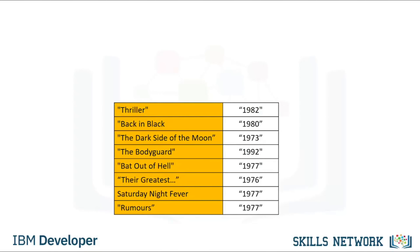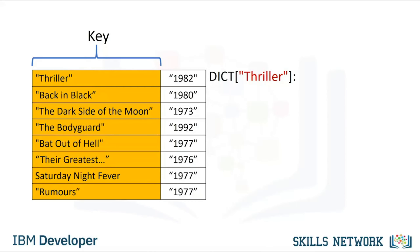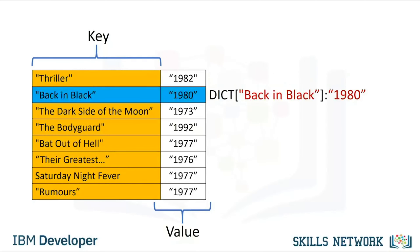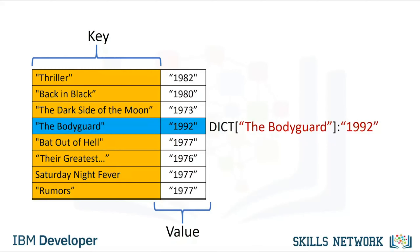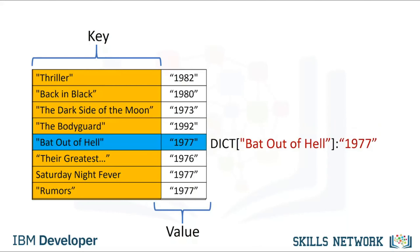We can add a few more examples to the dictionary and assign the dictionary to a variable. The key is used to look up the value using square brackets — the argument is the key and this outputs the value. Using the key Back in Black returns the value 1980. The key The Dark Side of the Moon gives us 1973. Using the key The Bodyguard gives us 1992, and so on.